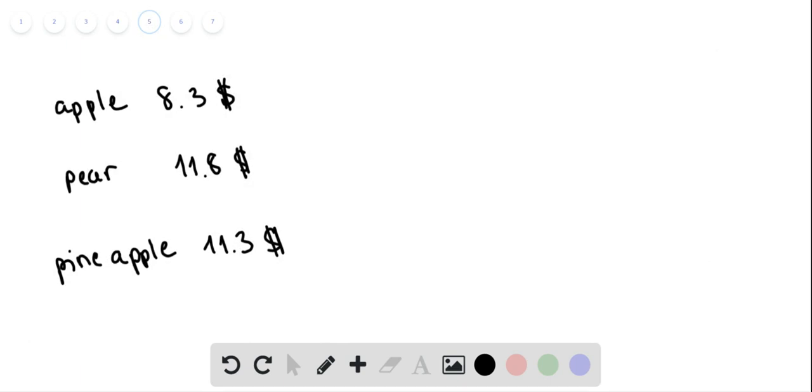apple is 8.3 dollars, pear is 11.8, and pineapple 11.3 for one gram. And so pear would be the most expensive one, and apple would be the least expensive one.